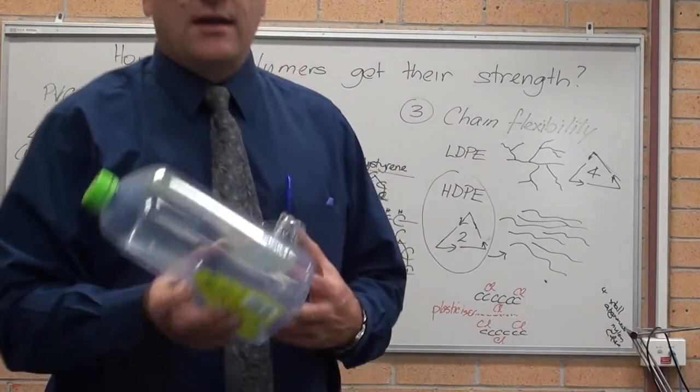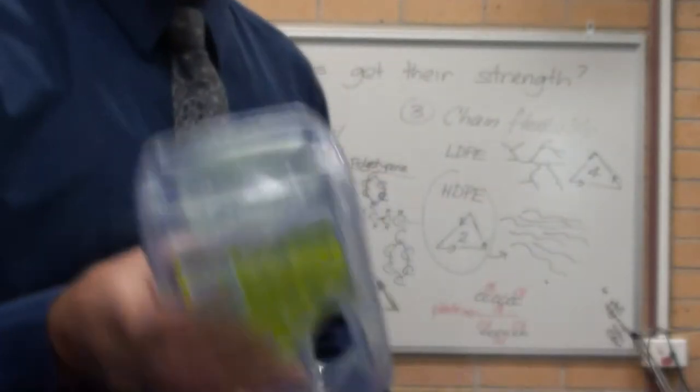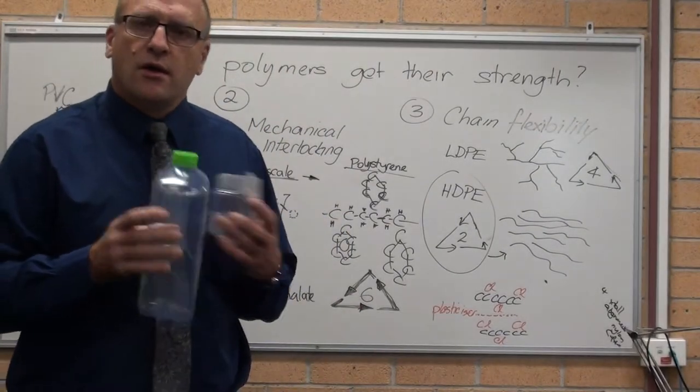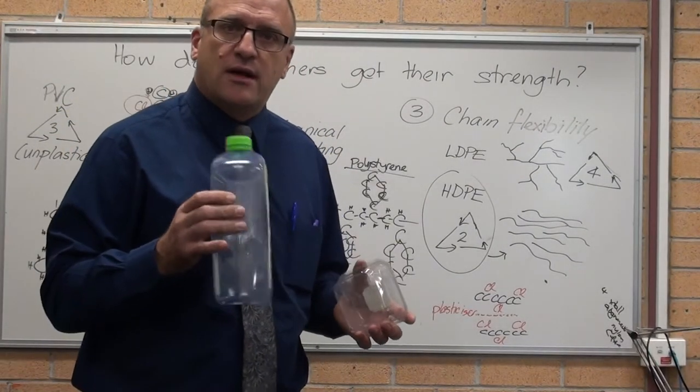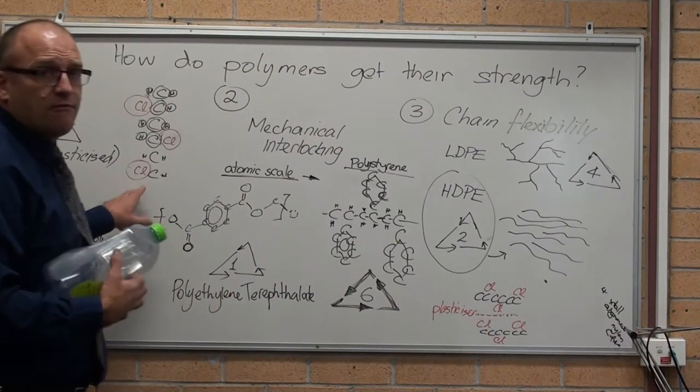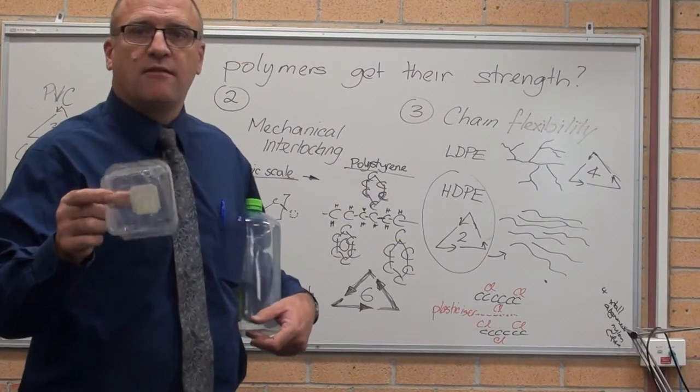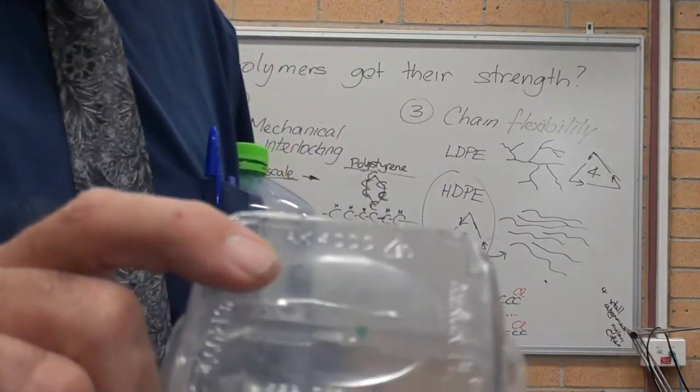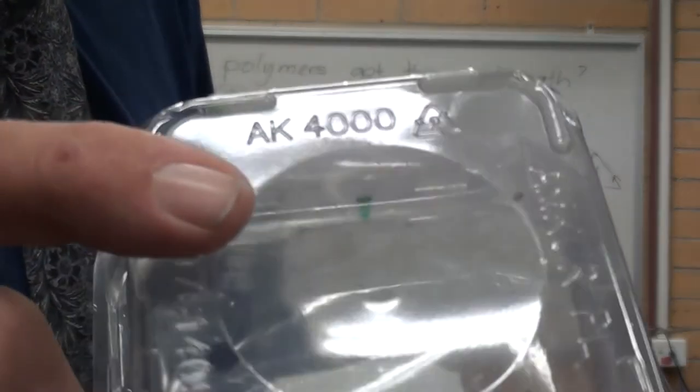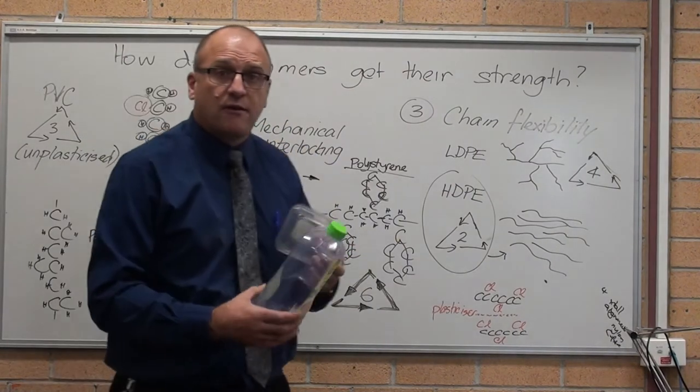Plasticised polyvinyl chloride, there you go. Hopefully, it shows clearly in the video. Recycling code 3. That is polyvinyl chloride. Not the world's best choice for food containers because the chlorine leaches into food. That is polyvinyl chloride. Recycling code 3, if it shows. There it is in the reflection. So, recycling code 3 is un-plasticised polyvinyl chloride.